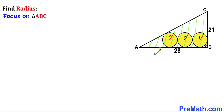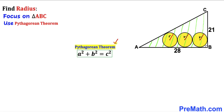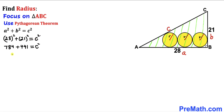Let's focus on right triangle ABC whose side lengths are 28 and 21, and figure out the longest leg AC. We'll use the Pythagorean theorem: A² + B² = C². With A = 28 and B = 21, we get C² = 784 + 441 = 1225. Taking the square root, C = 35. So AC turns out to be 35 units.